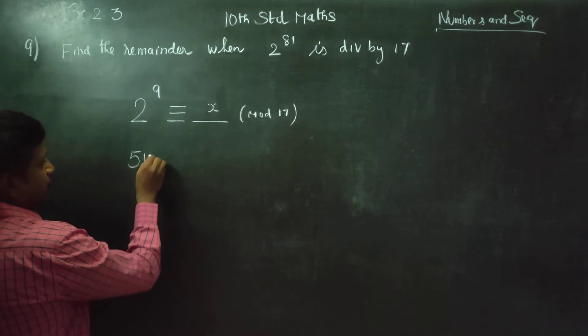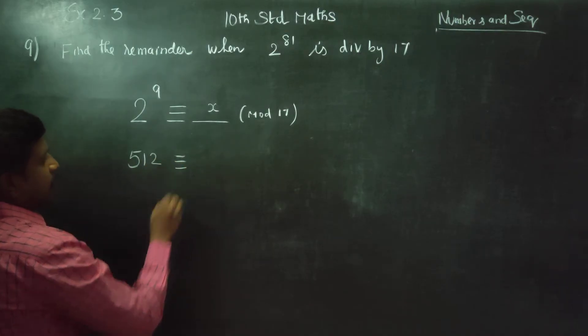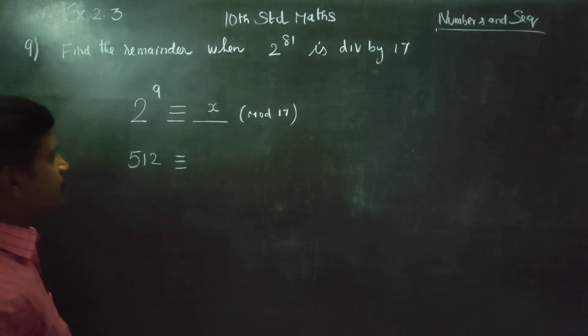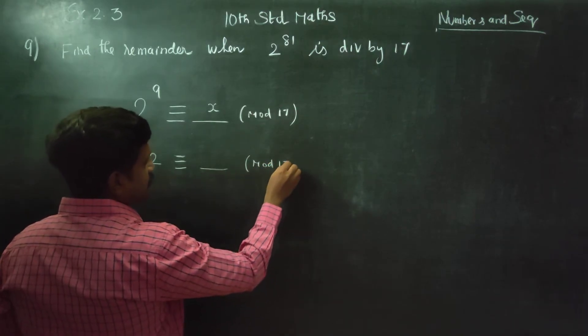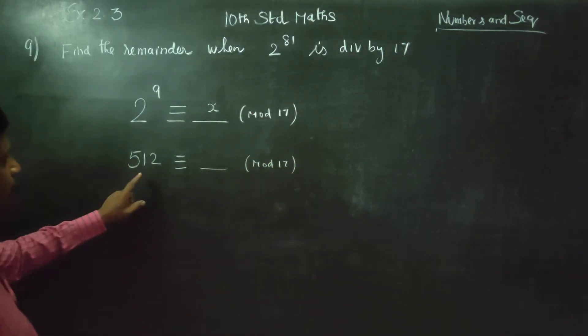2 power 9, that is 2 into 2 into 2, 9 times. 512 is what mod 17. This is the first step. 2 power 9 equals 512. This is the calculation.